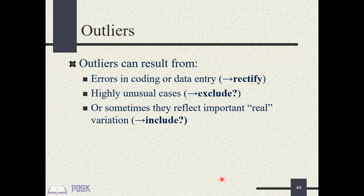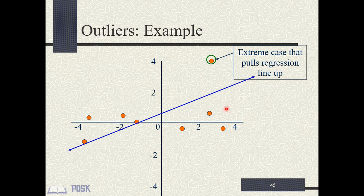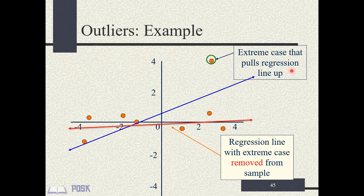Whatever decision you make must be reported in your methods/results section. Outliers that are not due to errors must be investigated further; if truly unique, they can be reported as case reports. This slide demonstrates how an influential outlier can pull the regression line towards itself and change the slope. When the outlier is removed, the regression line drops down, illustrating the adverse effect an influential outlier can have on the regression model.